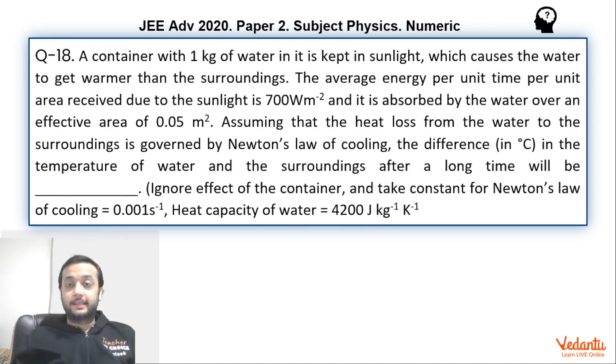Hi dear students, let's see this question that came in JEE Advanced paper 2 physics in the year 2020 from the topic of Newton's law of cooling. This was a numeric type question and this was a fairly simple question. I believe most of the students would have done it fairly easily. Let's see what's happening over here.